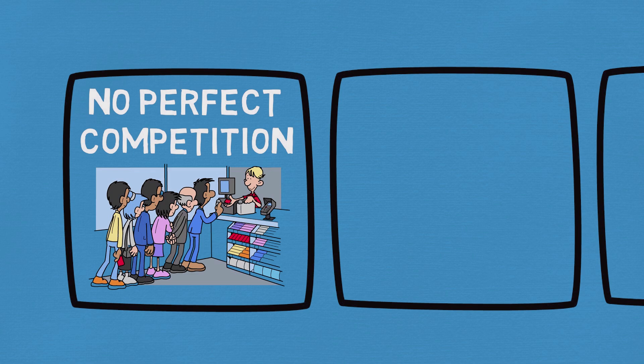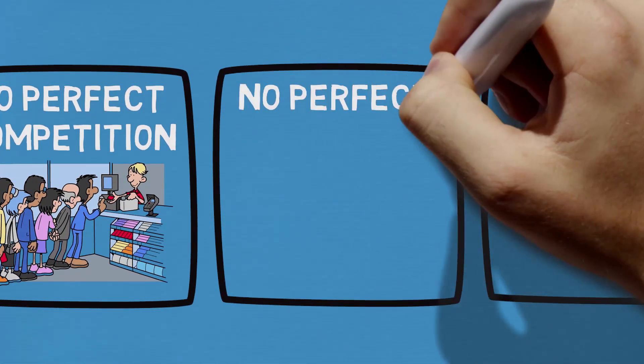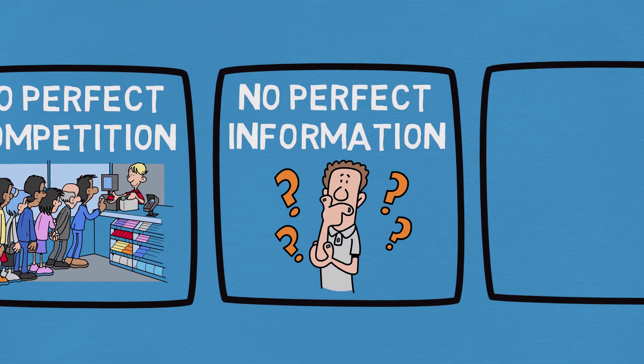Secondly, allocative efficiency also assumes perfect information — meaning buyers and sellers know everything about the products, the costs, the benefits, the alternatives, etc. In healthcare, consumers know a lot less than the providers. Consumers and patients usually trust the healthcare provider and purchase whatever is being suggested — this is called supplier-induced demand. It allows providers to sell more than they might have if patients had medical degrees and could make fully informed decisions.